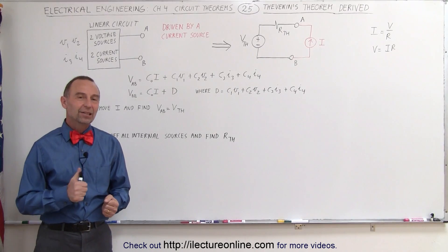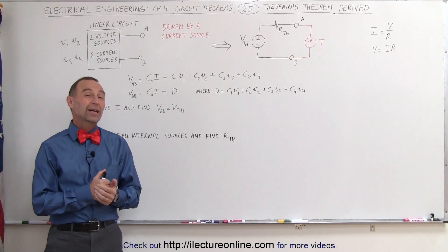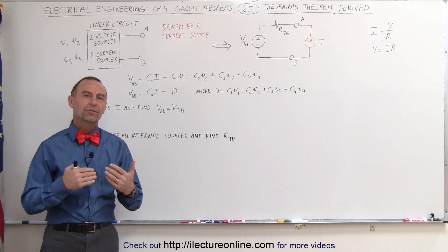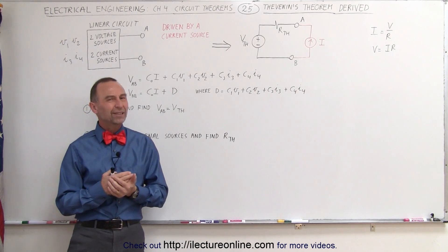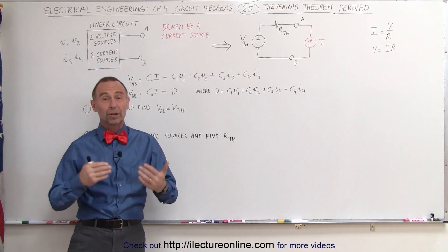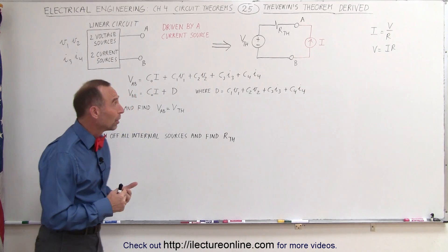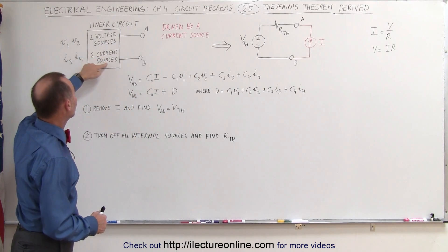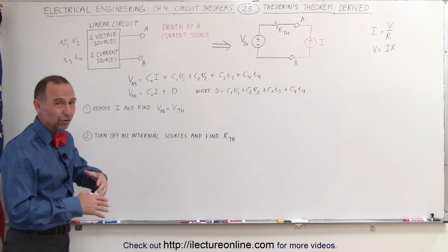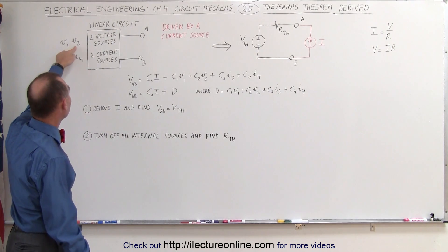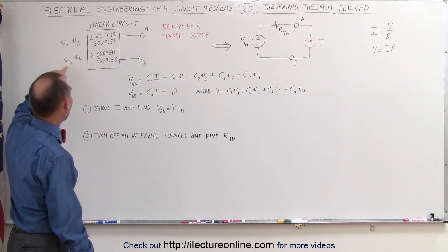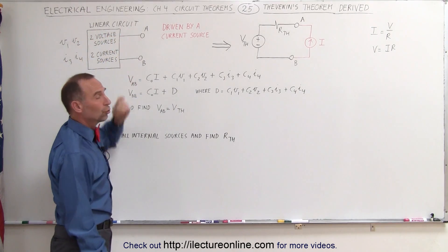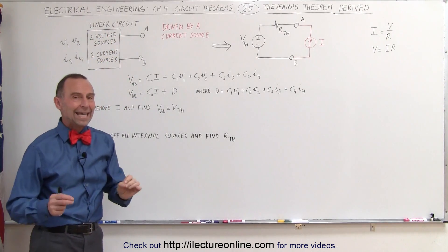Welcome to Electronal Line. In this video we're going to take a look at Thevenin's Theorem and how it was derived, or at least get a better understanding of what it means. Here we have a linear circuit that contains two voltage sources and two current sources — just arbitrary, we'll call them V1, V2, I3, and I4. Emanating from that linear circuit we have the two terminals A and B.